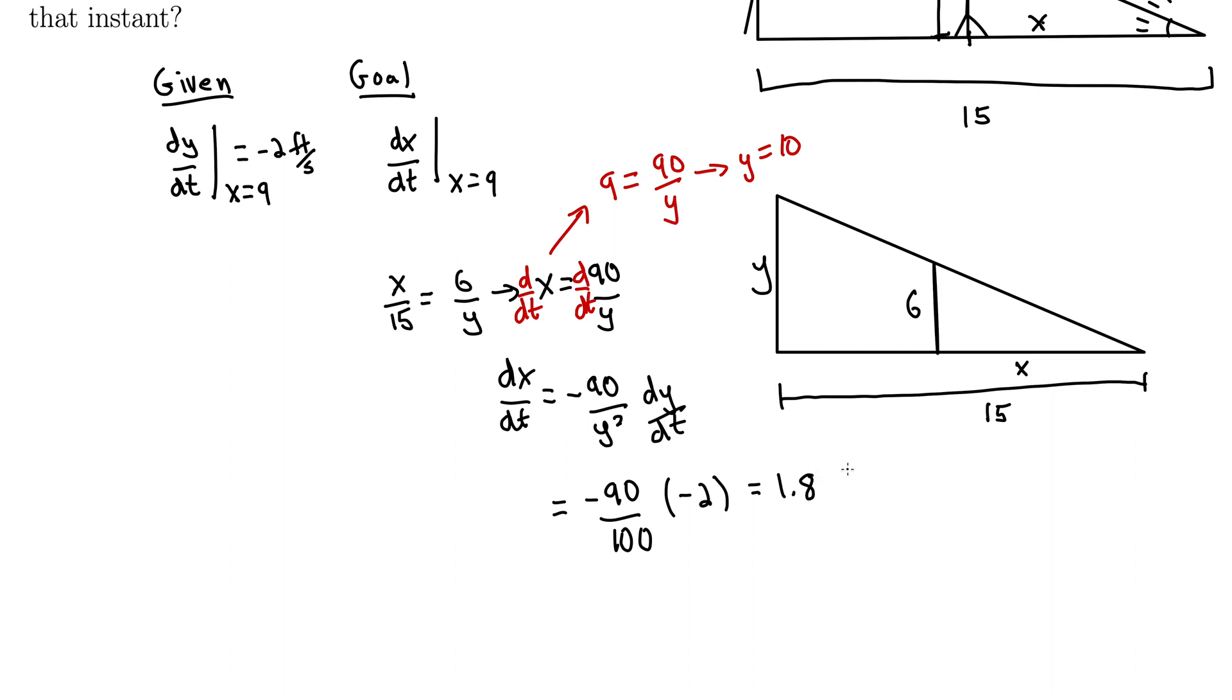1.8 what? Feet per second. That's the rate at which the man is walking towards the building. And to me, it's pretty incredible that we can compute that based on the rate at which the man's shadow is changing. We're doing some pretty serious mathematics here.